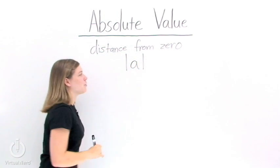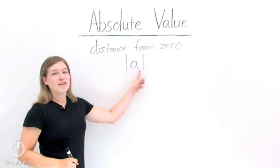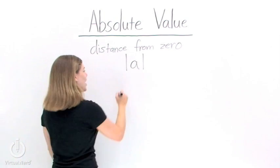Here's the form for absolute value: two vertical lines on either side of the number. Let's take a couple for practice.